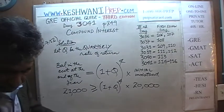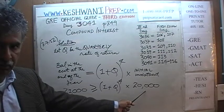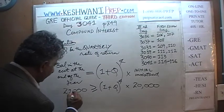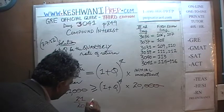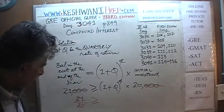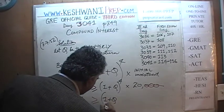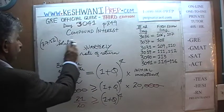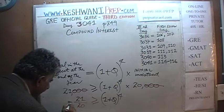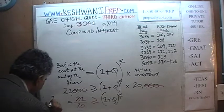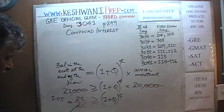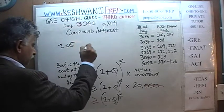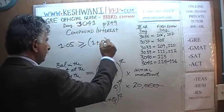Dividing both sides by 20,000, we get: (1 + Q) raised to 4 is less than or equal to 21 over 20, which is 1.05 — because 1 over 20 is 5%, so 21 over 20 is 1.05. So: (1 + Q) raised to 4 is less than or equal to 1.05.